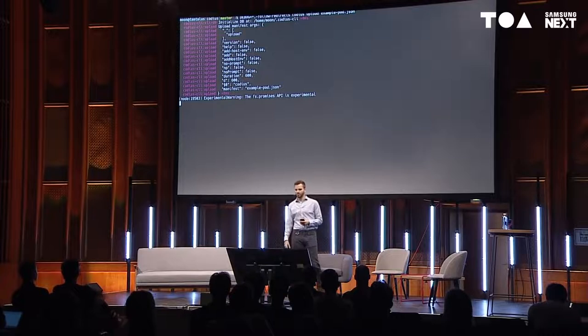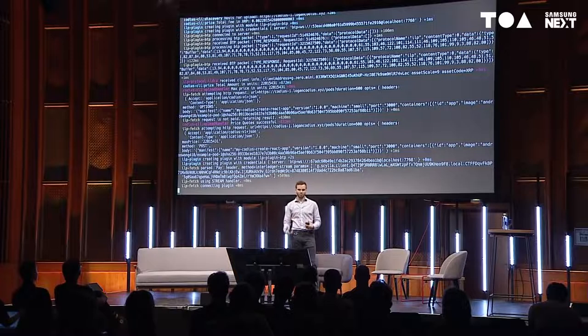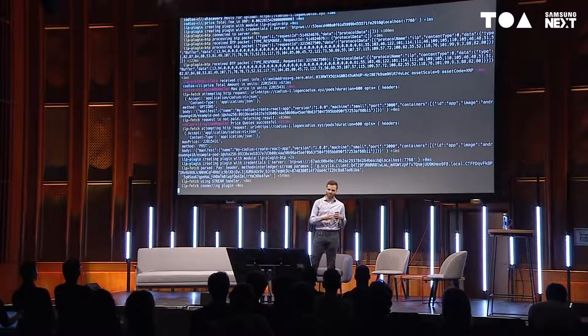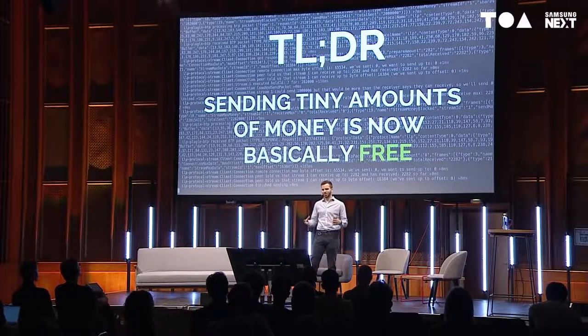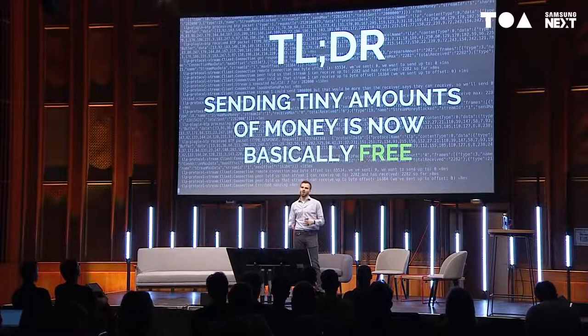I'll show some screenshots of what Interledger looks like in action. This is from a test paying for an API call — it contacts the server, gets a quote for how much to pay, then the protocol kicks off: splitting the payment into smaller packets, routing packets through the network, and figuring out how to settle them. Eventually the payment completes. The key takeaway is that Interledger lets you send tiny amounts of money with essentially no fees and no latency — it's instant.